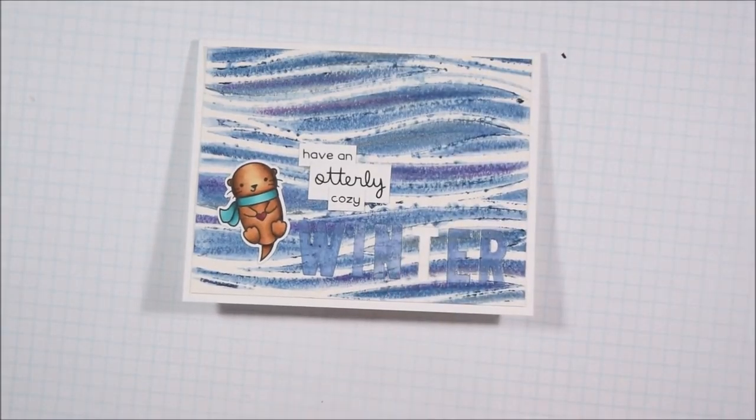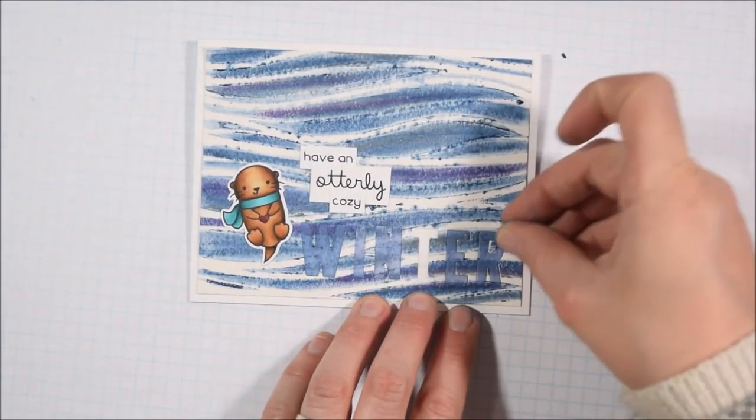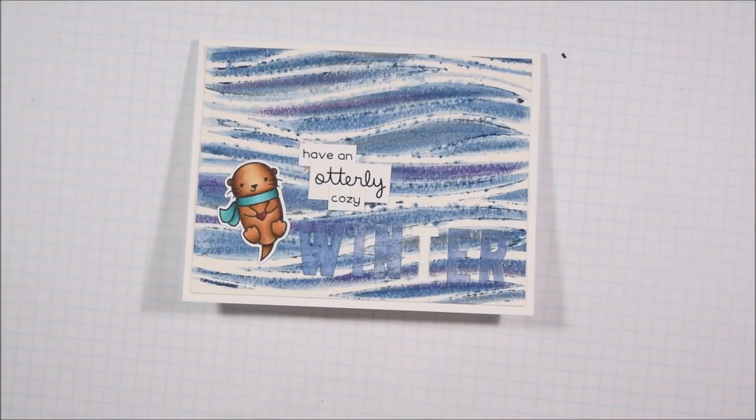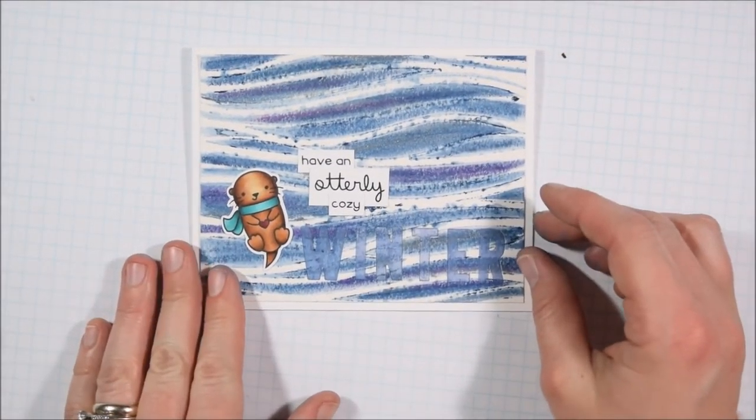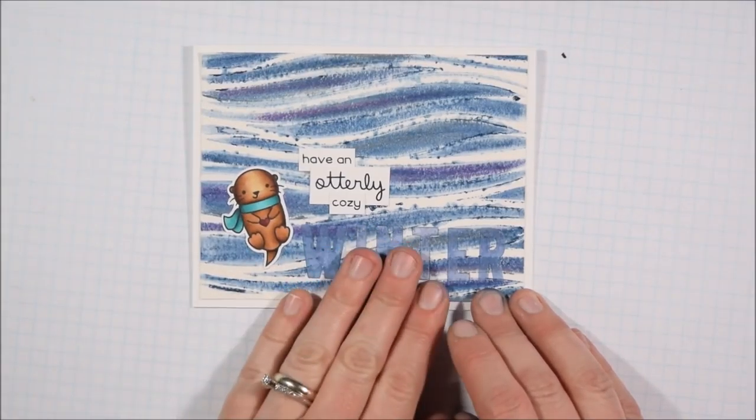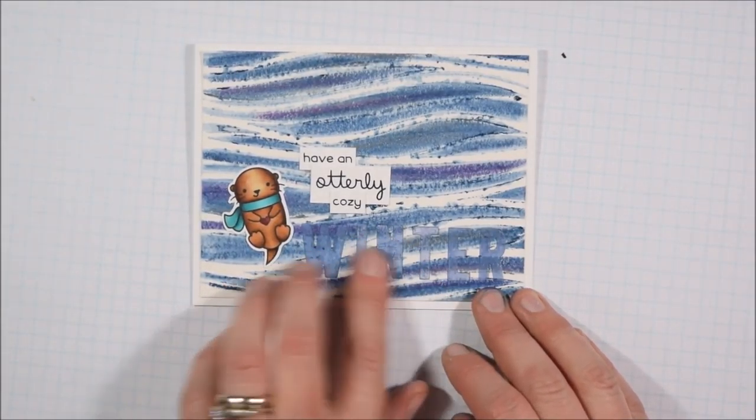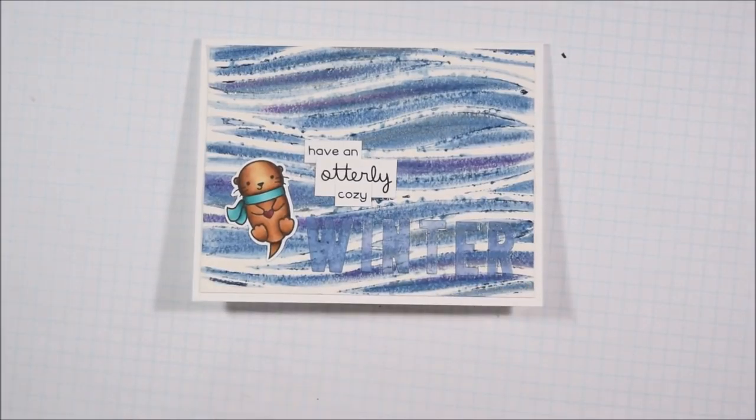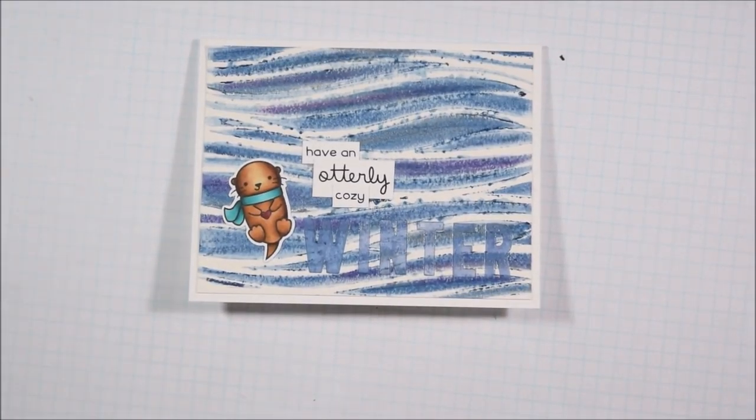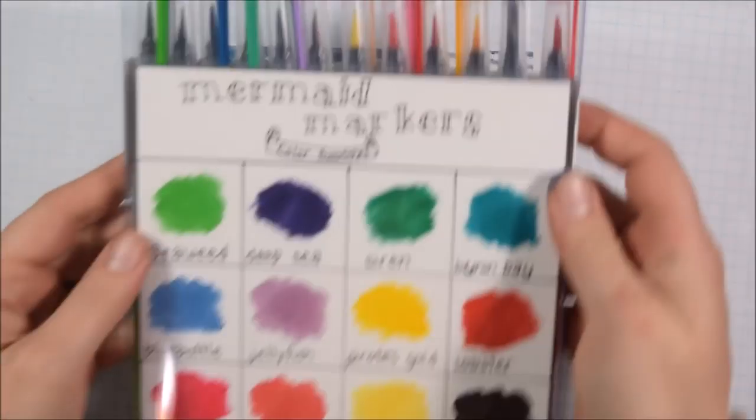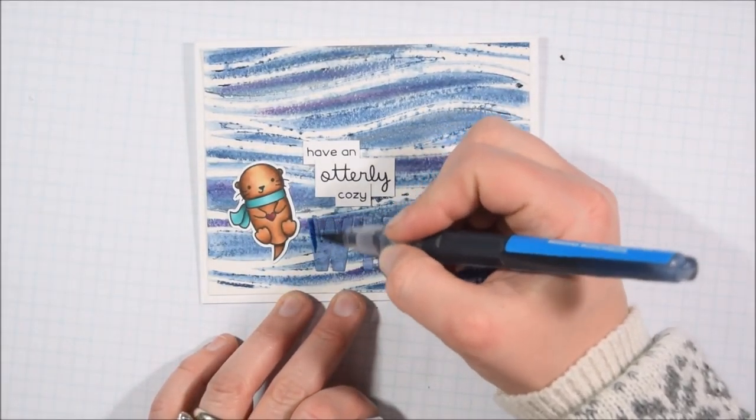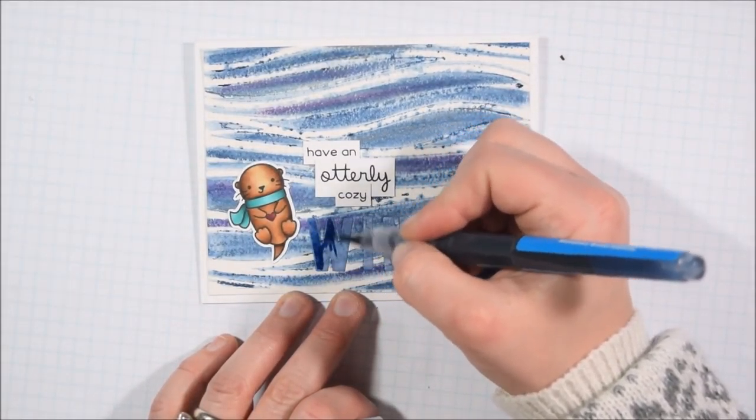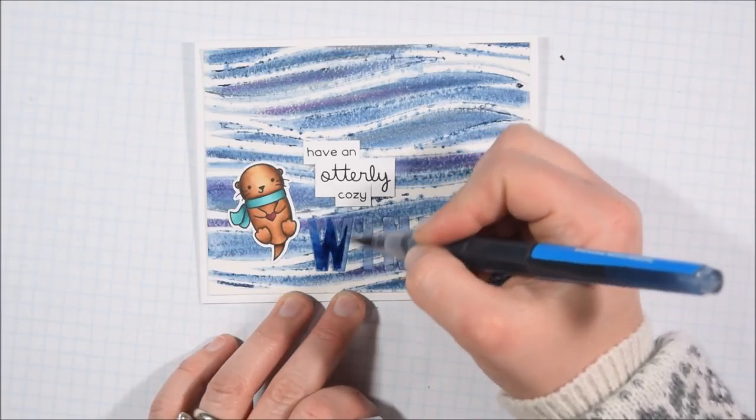In terms of the have an otterly cozy, I stamped all of that on some white thin strips of cardstock, layered them together, added my little otter that I finished coloring with those same colors and techniques that I mentioned earlier. Then I was just looking around my desk like what can I do to get some more color on here. I didn't want to color it with my copics because I wasn't sure how they'd react with the distress crayon and distress oxide that was already underneath it, so I pulled out these mermaid markers from Jane Davenport and American Crafts.